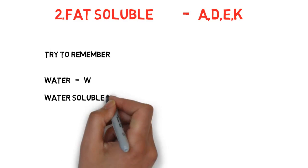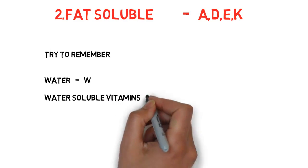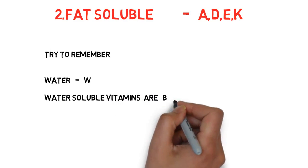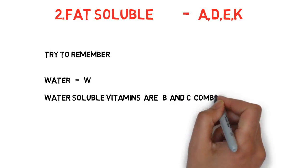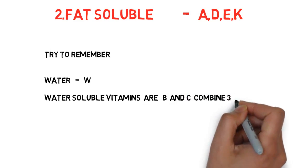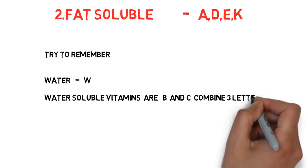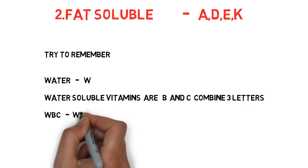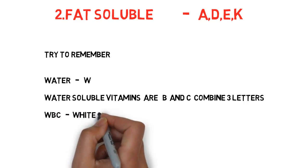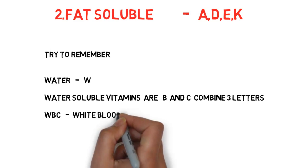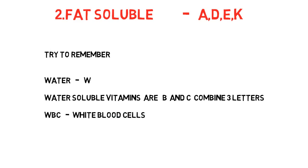The first type is water soluble. Try to remember water as W. Water soluble vitamins are B and C. Now combine these three letters: W, B, C. You know WBC stands for white blood cells, so you can remember this trick easily.